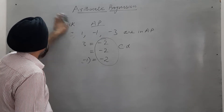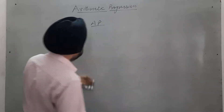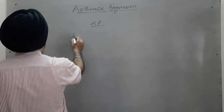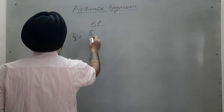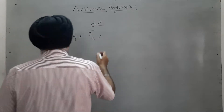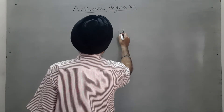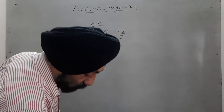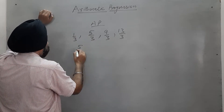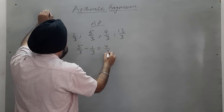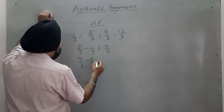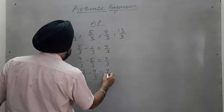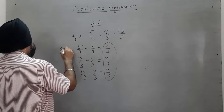Next example with fractions: 1/3, 5/3, 9/3, 13/3. Check whether these numbers are in AP or not. Second term minus first term gives 4/3. Then 9/3 minus 5/3 also gives 4/3. The common difference is the same, therefore these numbers are in AP.